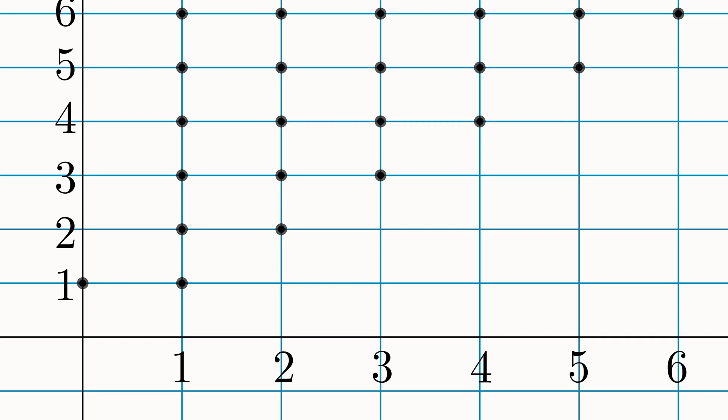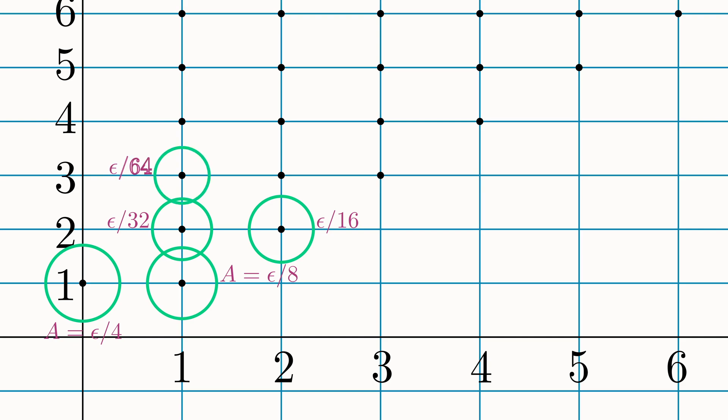Next, for each number in this list, we will draw a small circle around it. We will choose the mathematician's favorite arbitrarily small parameter, epsilon, and draw the first circle with an area of epsilon over 4. It will be clear why we are doing this in a few moments. The next circle will have area epsilon over 8, then followed by epsilon over 16, epsilon over 32, and all subsequent areas will be fixed according to the same pattern.